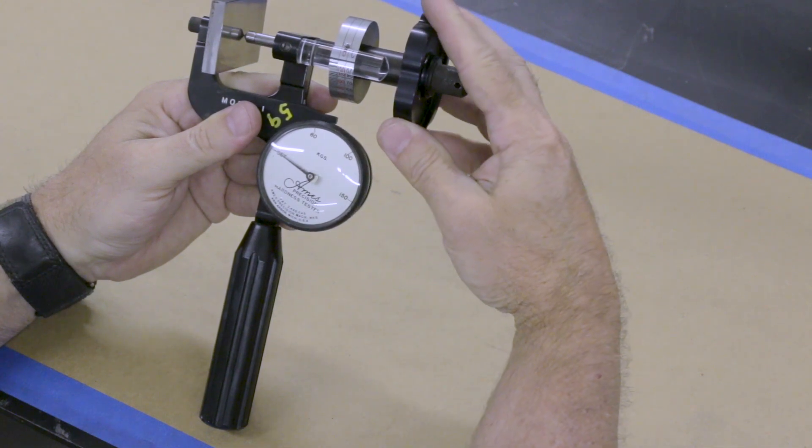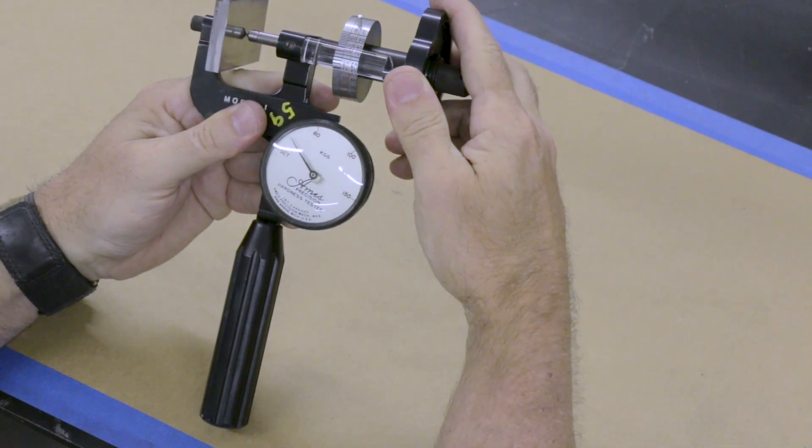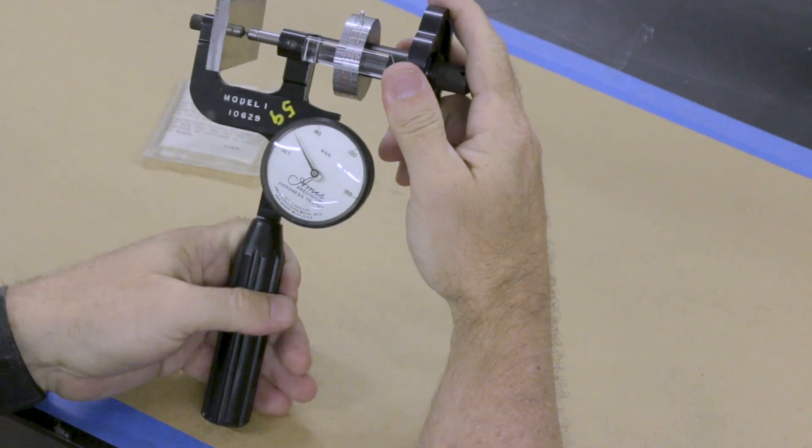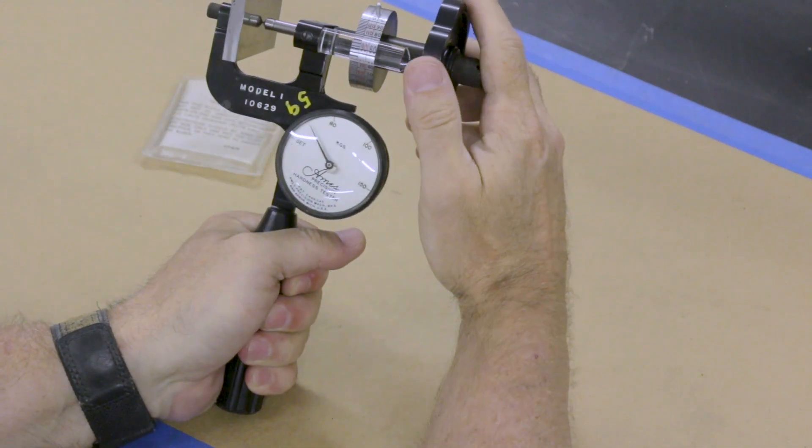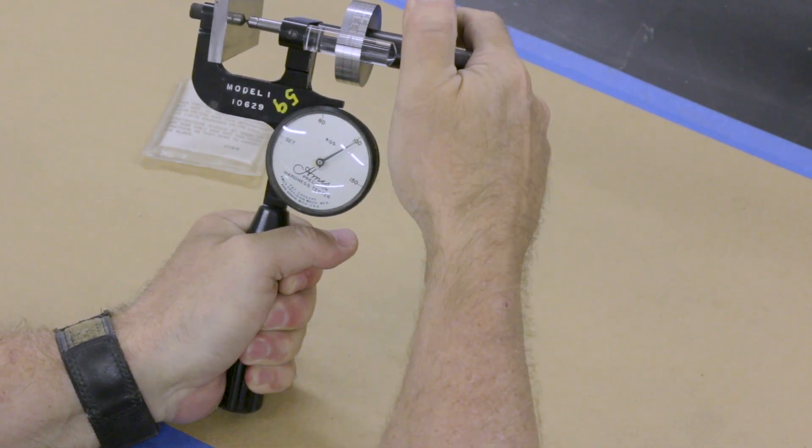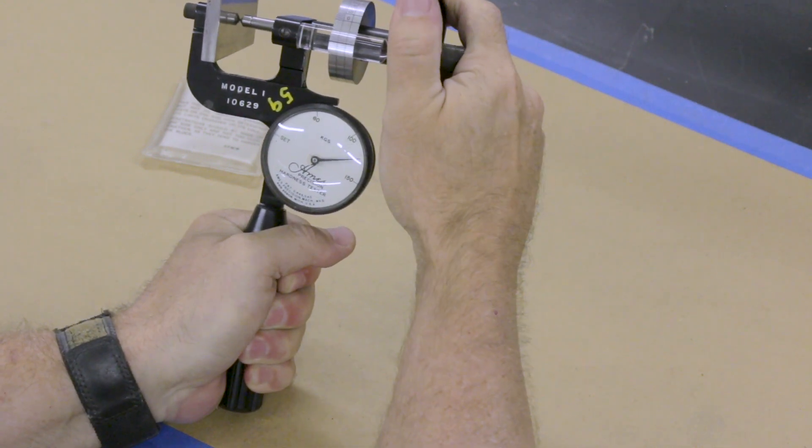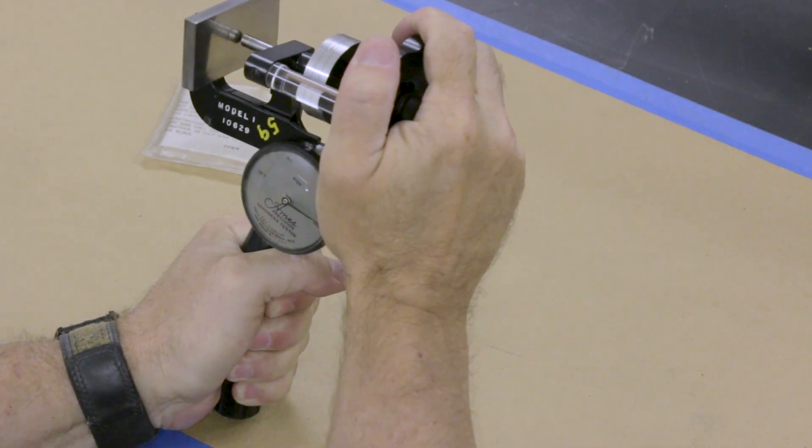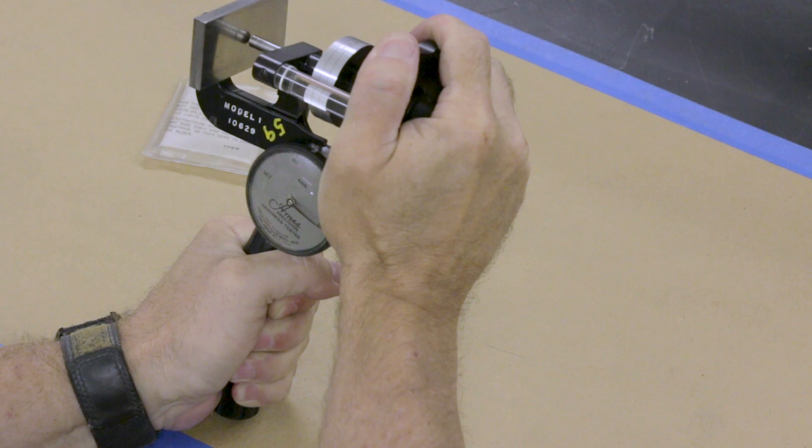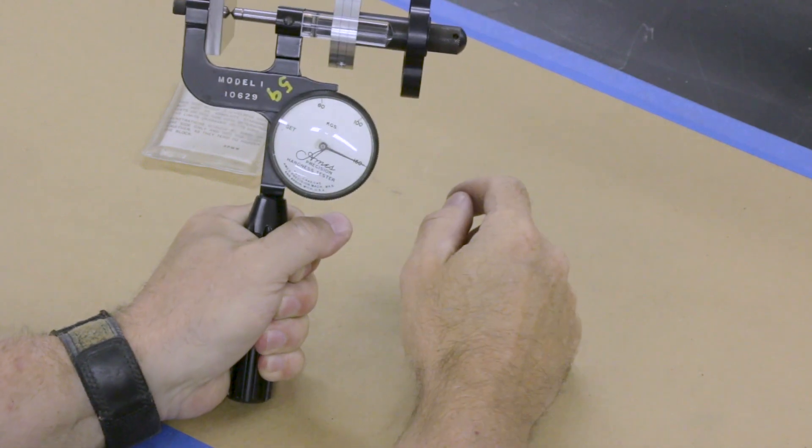So then I'm going to tighten this knob, and you can see that this thing is moving. At this point, I need to be holding the handle so that my hand doesn't influence the reading. And I'm going to go all the way to the 150 mark.